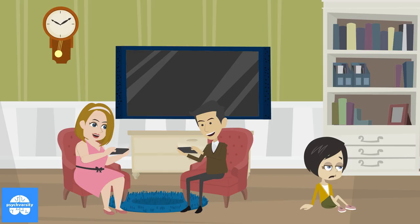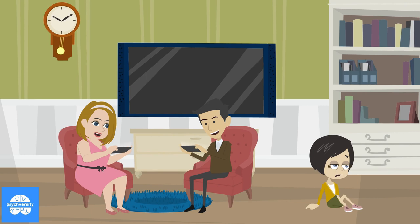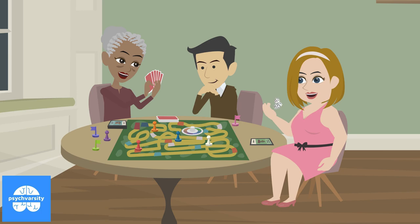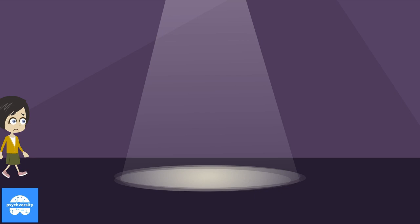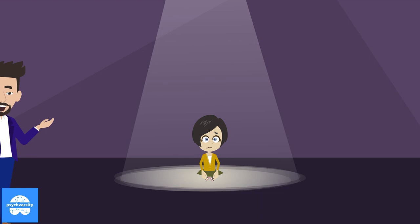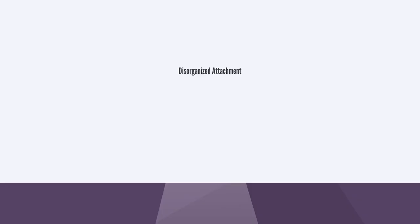Avoidant attachment — children with avoidant attachment feel unloved and have learned that their emotional needs are more likely to be unmet. This typically arises when a parental figure is neglectful and barely present in their lives. They learn that the best way to cope with disappointment is to never put themselves in a place where they could become disappointed, thus leading to frequent avoidance.